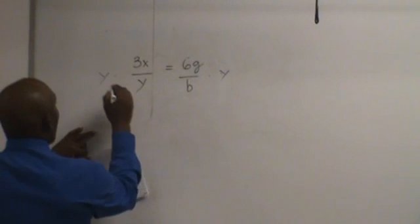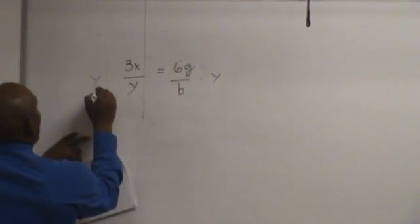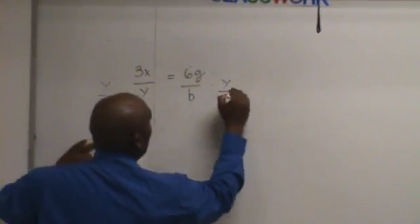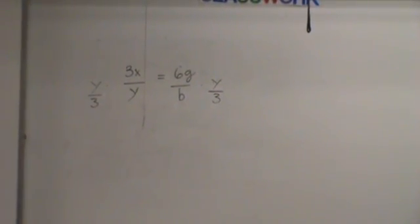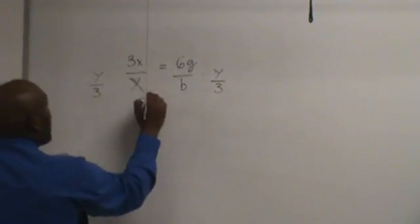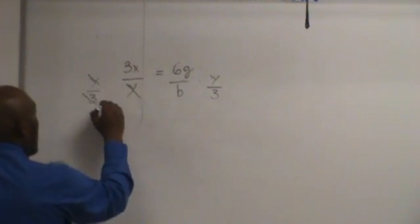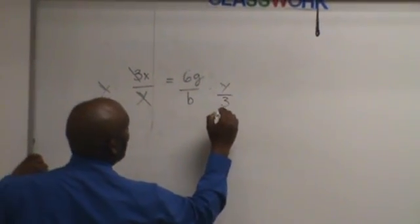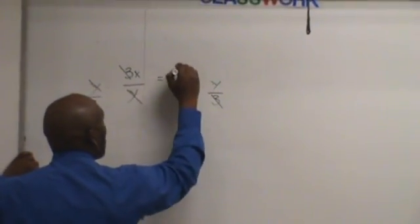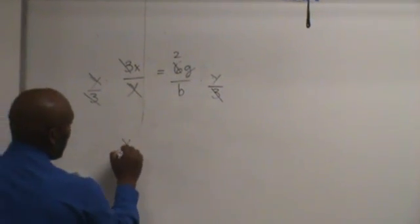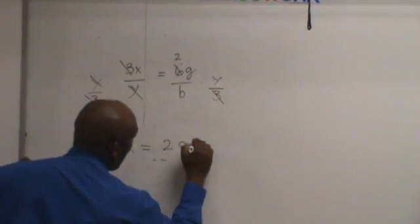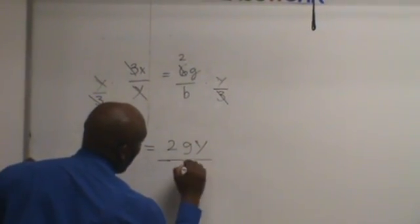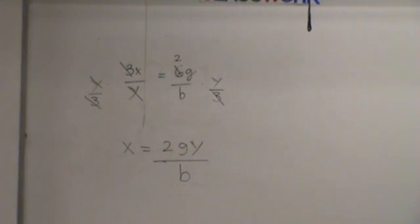It's as simple as it is. And to get rid of the 3, I have to divide both sides by what? If I do it on the left, I have to do it on the right. So now that cancels that. That cancels that. 3 gives me 2. So what am I left with? x equals 2gy over b. Who got that? Awesome.